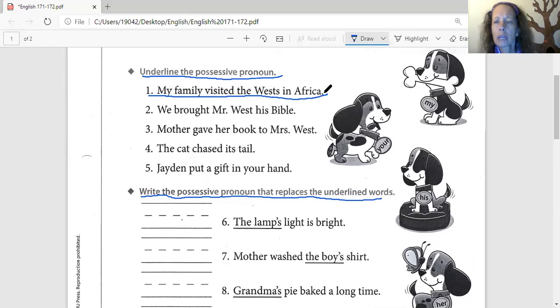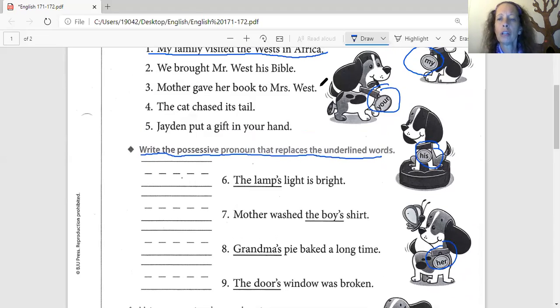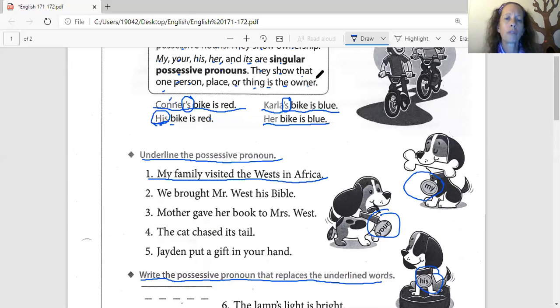Write the possessive pronoun that replaces the underlined words. Here we go. Look at these little words up here. Oh. See them? Look at the dogs. The dog tags. My. Oh, here we go. I figured it out. My. Your. His. There it is. Her. It. And it. Okay. So, let's go back up here. These words. See the words that I circled? Oh, yeah. Those are the ones I'm looking for right here.